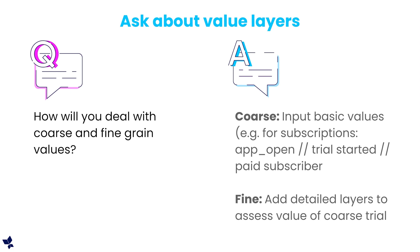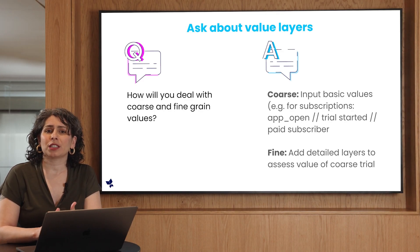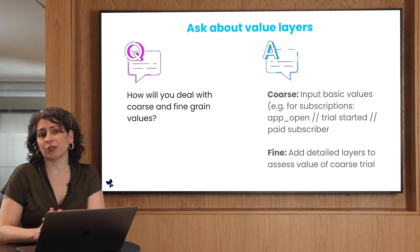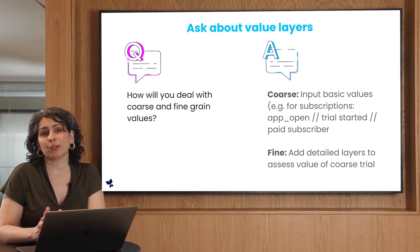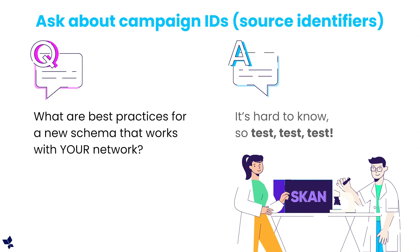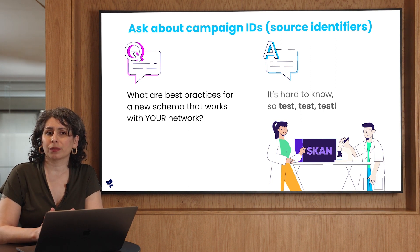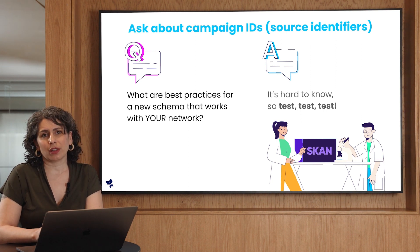Follow up with the question: how will you deal with coarse and fine-grained values? They will likely tell you: for coarse, we'll input basic values like subscribers, app open, trial started, and converted to paid. And for fine, we'll add detailed layers to assess the value of a coarse trial. Lastly, ask about campaign IDs, also known as source identifiers. Ask them: what are your best practices for a new schema on your network? Since it's hard to know, they'll probably tell you to test, test, test.